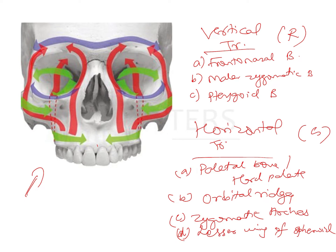The frontonasal buttress is the vertical trajectory that transmits forces from the incisors up to the first premolars. It runs cranially along the sides of the piriform aperture, passes through the nasal bone, and terminates in the frontal bone.